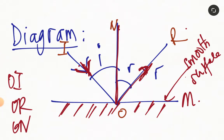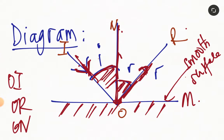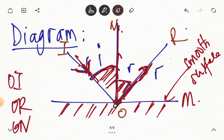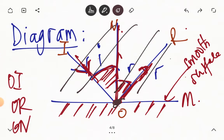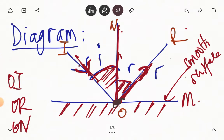The angle between the incident ray and the normal is what we call I, and the angle between the normal and the reflected ray is what we call R. According to Law 1, the incident ray, the reflected ray, and the normal at the point of incidence all lie in the same plane — I, R, and N all lie in this upper plane. Then according to Law 2, this angle I is equal to angle R. That is I equals R.